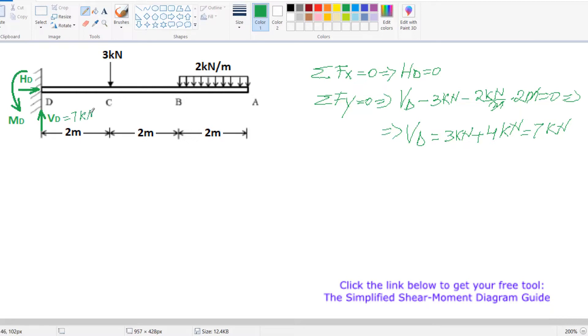Next, we will calculate the moment. Sum of moments in point D equals zero. This results in MD minus our point load 3 kN and the arm is 2 meters.